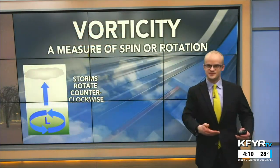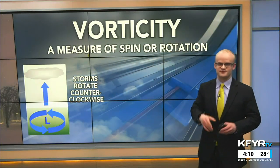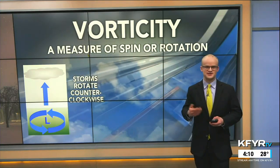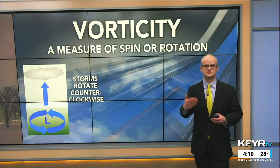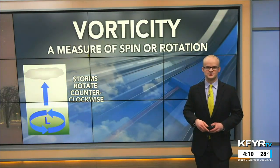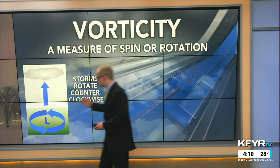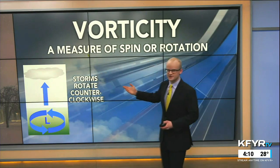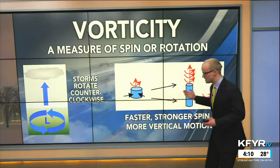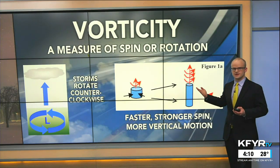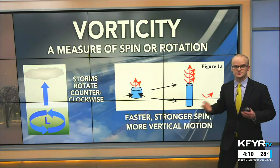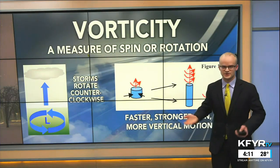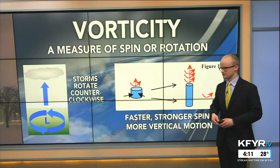All of these dips in the jet stream form spin. Our big word today is vorticity — breaking it down, think of 'vortex' as spin in the atmosphere. Vorticity basically means a measure of spin or rotation in the lower levels of the atmosphere. Areas of low pressure and storm systems rotate counterclockwise, and that allows for uplift in the atmosphere. The faster these storms rotate, the more vertical motion there is, and the more precipitation that can form, because we're getting more water vapor to condense and cool in the upper levels of the atmosphere.